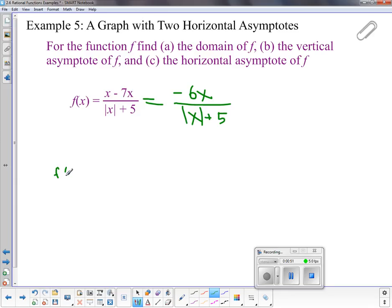We're going to rewrite this function with its two cases. So we have the case where x is going to be greater than 0. If x is bigger than or equal to 0, then this is just exactly what it is, and there's no change. It's just negative 6x over x plus 5.